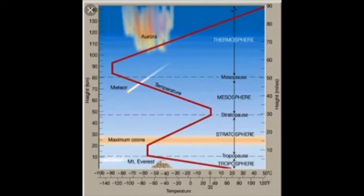In the stratosphere, the temperature increases with increase in altitude — unlike the troposphere, where temperature decreases. The reason is that the direct heat source of the stratosphere is the sun: a layer of ozone molecules absorbs the solar radiation, which heats the stratosphere. The stratopause separates the stratosphere and the mesosphere.